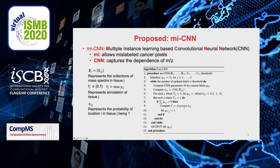Pi_ij represents the probability of location i in tissue J being positive. The algorithm initializes Y_ij by Y_J, computes CNN parameters for the current labels, then computes pi_ij, and updates Y_ij based on pi_ij in the tumor tissues. Note that we do not update Y_ij in non-tumor tissues. If all locations on a tumor tissue are predicted as non-tumor, we select the location with the highest probability of being tumor as tumor. This process repeats until the change in updated labels falls below a threshold.